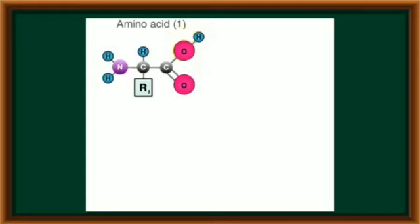In the structure of each amino acid, the central carbon is called alpha carbon. It can form four bonds: one bond is formed with alkyl group, one bond is formed with hydrogen, the third bond is formed with amino functional group, and fourth bond is formed with carboxylic functional group. It is the basic structure of amino acid. In this amino acid, where amino functional group is present, it is referred as N-terminal end. Where carboxylic functional group is present, it is referred as C-terminal end.